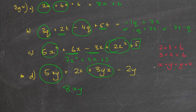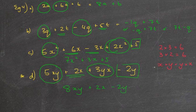Then I've got plus 2X, well, there are no other Xs, so I'll just put plus 2X there. And I've got these minus 2Y on the end, and I'll put minus 2Y there.